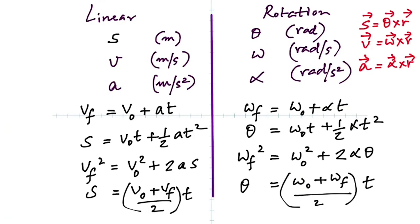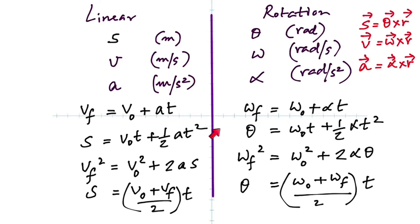Here is the complete comparison of linear motion with rotational motion. S corresponds to theta, velocity corresponds to omega, A corresponds to alpha. Here are the relations between them. And then the kinematic equations — this brings us to the end of section two.